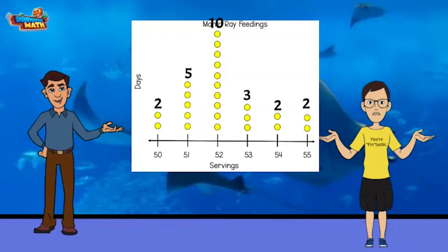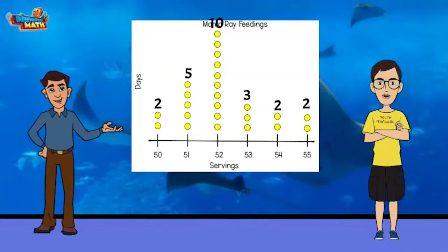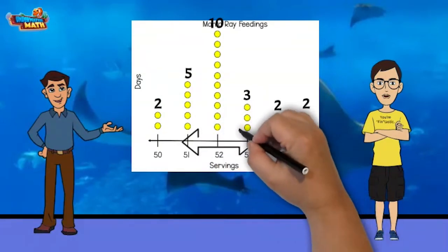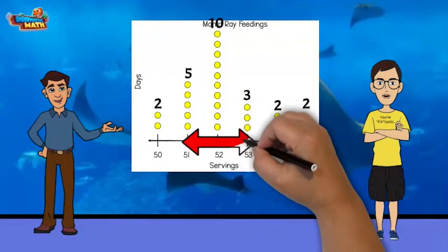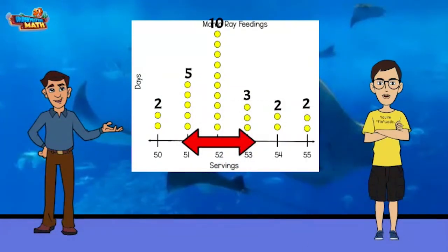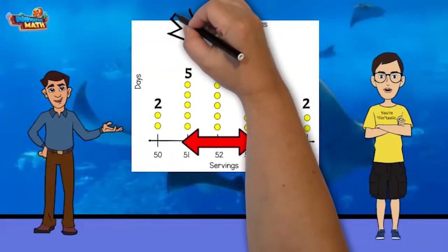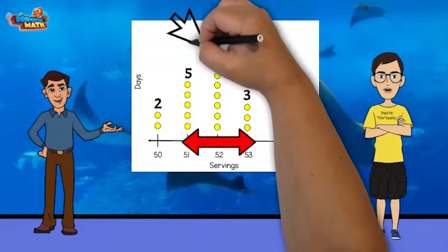Why do you put the data in a dot plot? Great question. This helps us plan for how many servings we should order for the next month. I look to see where the most dots are scattered. I see a lot of dots around 51, 52, and 53. That's right. So the next month, we will order 52 servings per day.